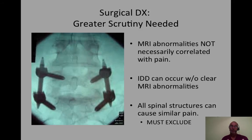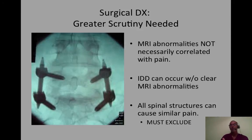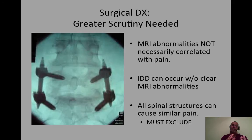Sometimes surgery needs to be considered, and in these cases diagnostic scrutiny is greatly heightened, for three reasons. Not all abnormalities seen on an MRI correlate with pain. Even more confusing, internal disc damage can occur with very minimal abnormalities seen on the MRI. And lastly, all spinal structures cause very similar pain patterns. Before a disc is operated on, it's very important to make sure these non-disc structures have been excluded as a significant source of pain.